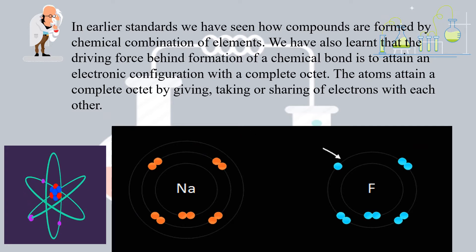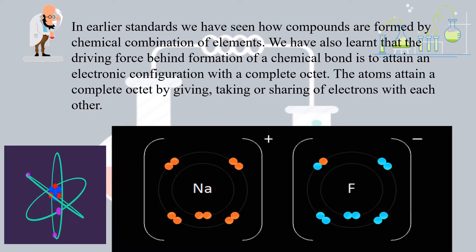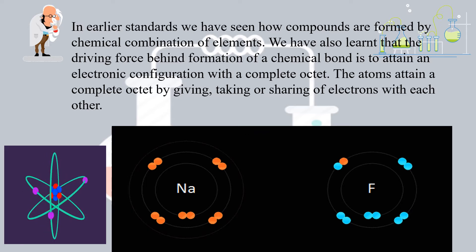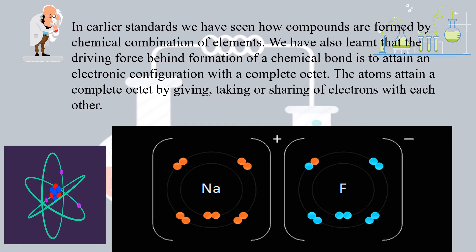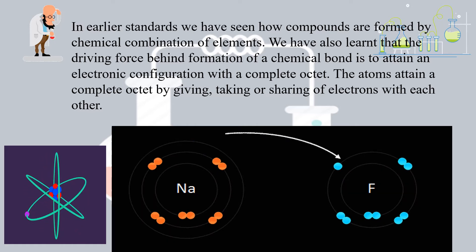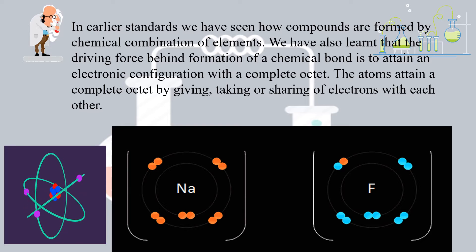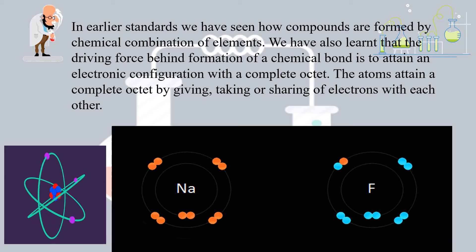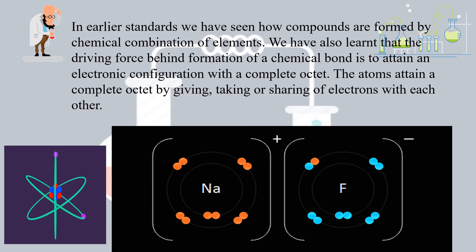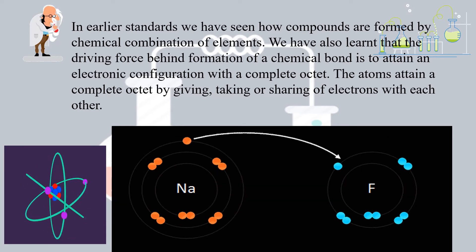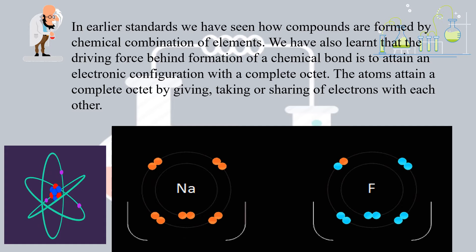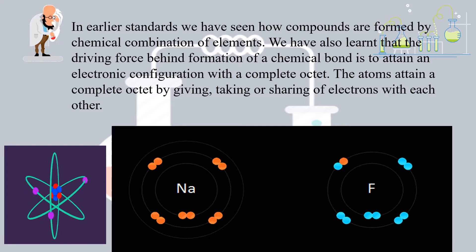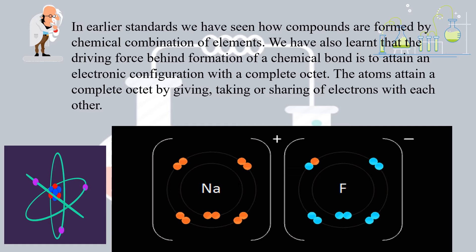In your earlier standards we have seen how compounds are formed by chemical combination of elements. We have learnt about how elements form compounds and how they react with each other. We have also learnt that the driving force behind formation of a chemical bond is to attain a stable electronic configuration — in order to complete the octet. The atoms attain a complete octet by giving, taking, or sharing of electrons with each other.